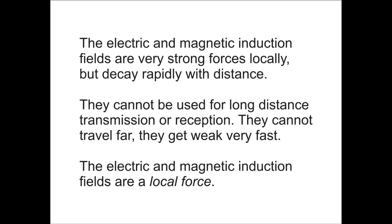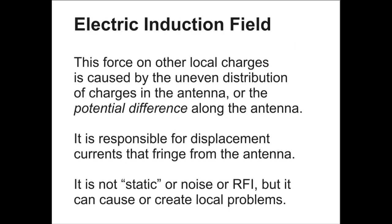The electric and magnetic induction fields are a local force, not a long-distance force. If you have a magnetic loop or any kind of loop antenna and you think it's receiving magnetic waves from a long distance away, you're just wrong. The electric induction field is a force on other local charges caused by the uneven distribution of charges in our antenna, or the potential difference along the antenna. It is responsible for displacement currents that fringe off the end of the antenna — creating the end effect, where open-ended antennas like dipoles are electrically a little bit longer than their physical length.